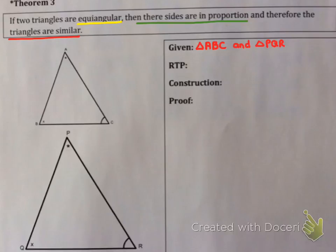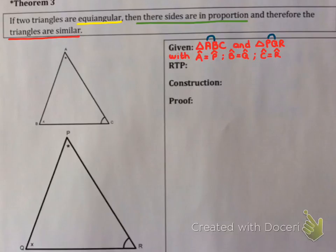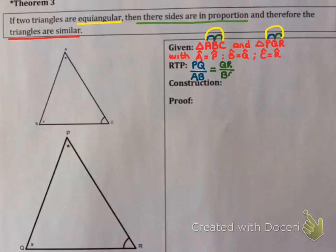You're given triangle ABC and triangle PQR, and told they're equi-angular: angle A equals angle P, angle B equals angle Q, and angle C equals angle R. What are we trying to prove? We're trying to prove the sides are in proportion, because then they'd be similar. AB and PQ are in the same position, BC and QR are in the same position, and AC and PR are in the same position. I'm going to choose to prove that PQ compared to AB equals QR compared to BC.